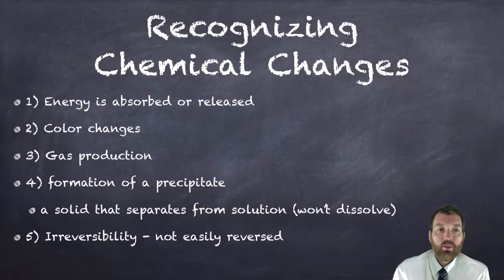Clue number five is irreversibility, meaning it's not easily reversed. You can't take the products and turn them back into the reactants that you started with.